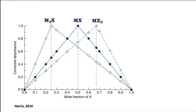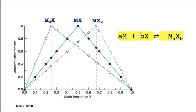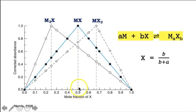In the same way, these graphs show the ideal behavior of Job plots for the formation of complexes M₃X, MX, and MX₂. In general, for the reaction aM + bX → MₐXᵦ, the maximum absorbance occurs when the mole fraction of X equals B/(B + A). So if M₁X₃ were predominant, the maximum would occur at mole fraction X = 1/(1 + 3) = 0.25. Similarly, the position of the maximum at mole fraction 0.5 provides the 1:1 stoichiometry.